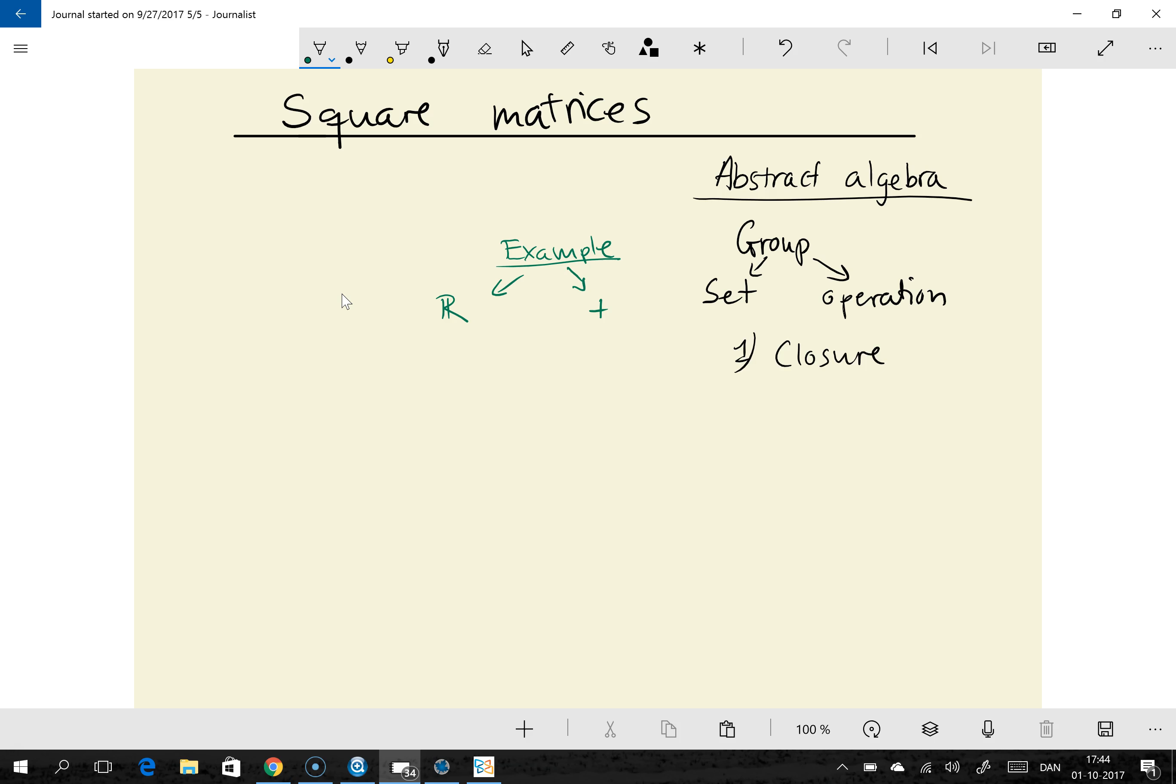So the first requirement that this set and operation must meet is the requirement of closure. Closure means that if I take an element x from the set and another element y from the set, and I use this operation to combine these two elements, so x plus y, let's say that's z, then we demand that z is also a member of the set. And that's pretty obvious when we're dealing with real numbers. If you add two real numbers, you get another real number out of it.